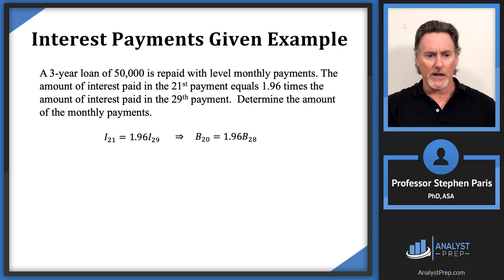So level monthly payments prospectively. For instance, at time 20 I've got 36 total payments. A three-year loan with monthly payments is 36 total payments. Just after the 20th payment I've got 16 more payments to make, so the balance at time 20 would be the present value of those 16 payments. I'll use capital C as the amount of the payment, so I get B sub 20 is C times a angle 16.